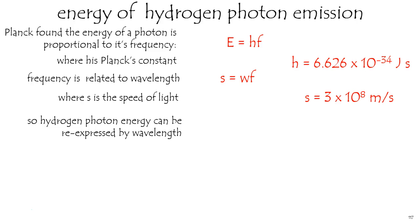So we should be able to express energy in terms of wavelength. After all, E equals H times whatever F is. This formula tells us, with a little bit of rearranging, that F equals S over W. So let's just do that. E equals HS over W.